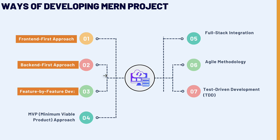For the feature-by-feature development approach, we build one complete feature at a time, integrating both front-end and backend. The workflow is: choose a feature, build the backend API for it, then create the front-end interface that interacts with that API. One advantage is that it keeps development focused and manageable, allowing for testing the whole system feature by feature. After each feature is completed, we move on to the next.